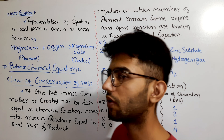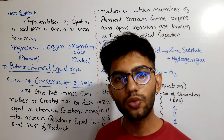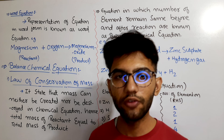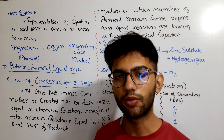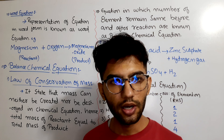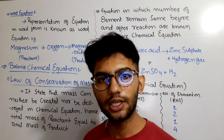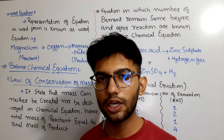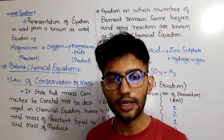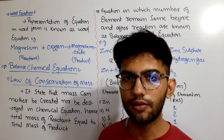Now, what is a word equation? If we represent a chemical reaction not in symbolic form but in word form, it is generally known as a word equation. For example, one molecule of hydrogen reacts with one atom of oxygen to form one compound of water — that reaction expressed in words is a word equation.